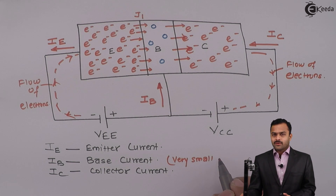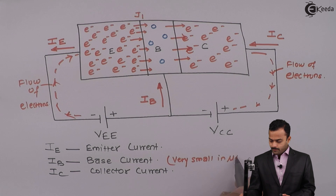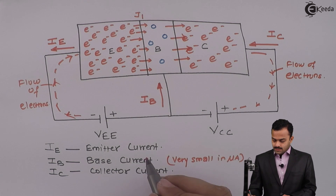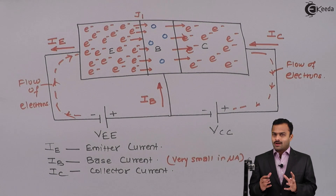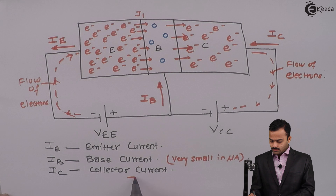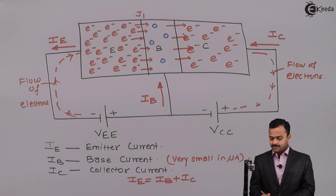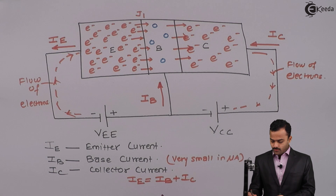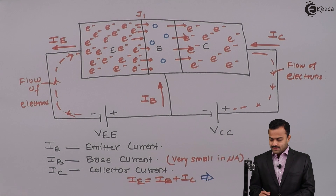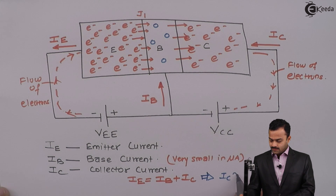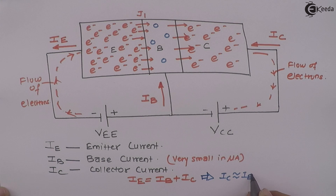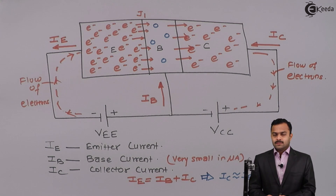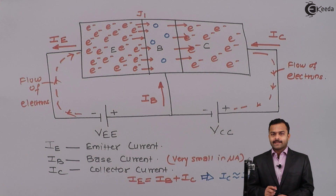IB is in microamperes. Applying KCL, the emitter current equals the sum of base current and collector current: IE = IB + IC. Since IB is very small, this implies that collector current IC is almost equal to emitter current IE. This is what happens inside a transistor when biased in the active region.